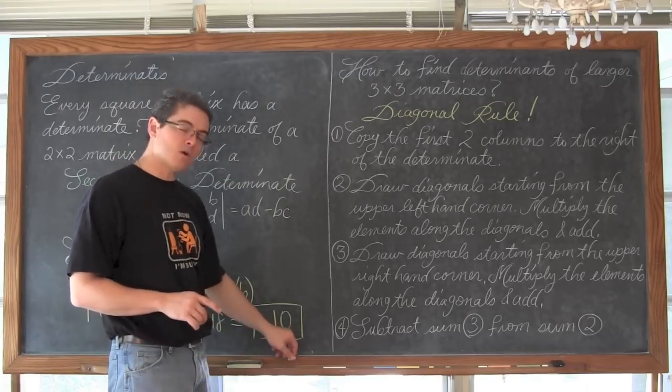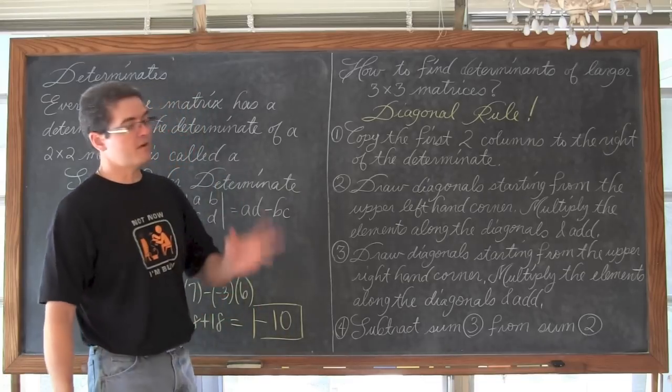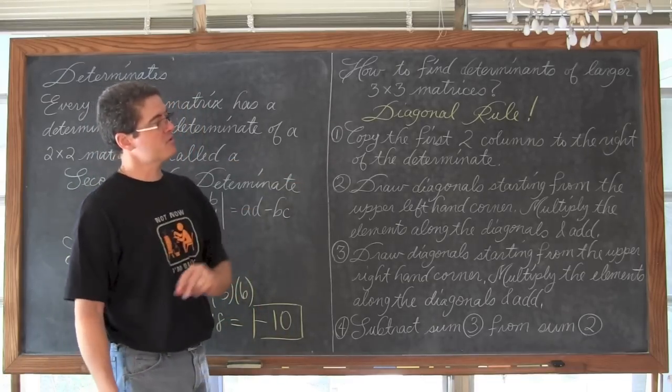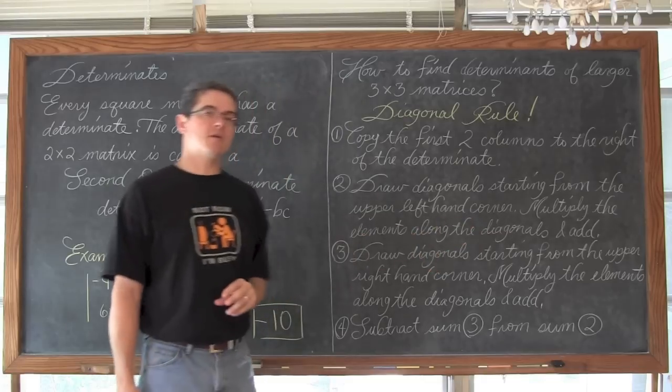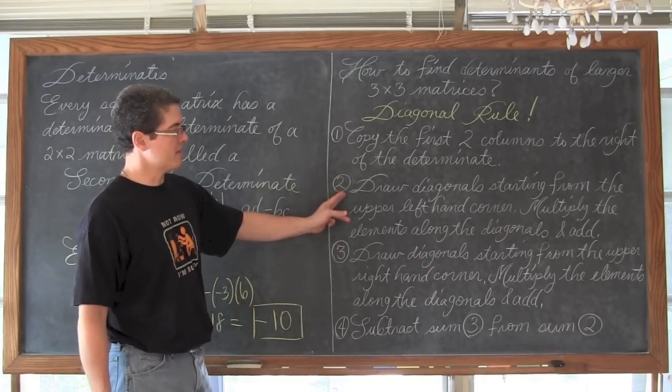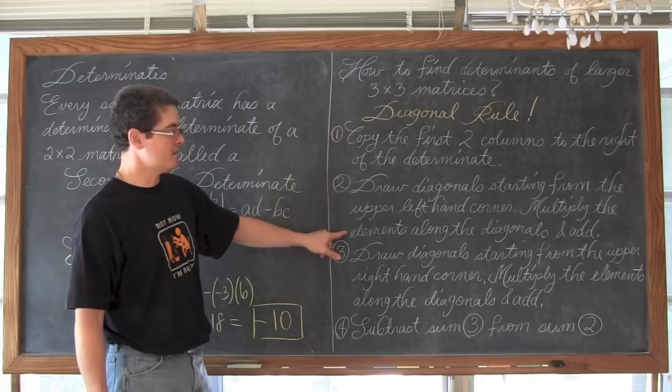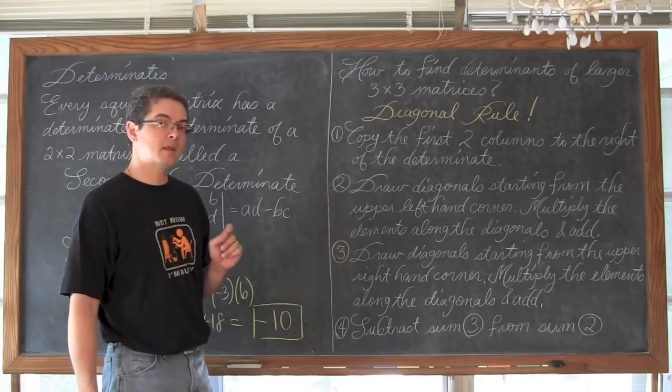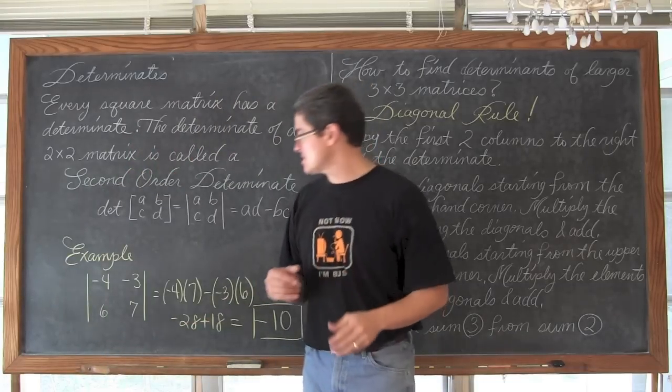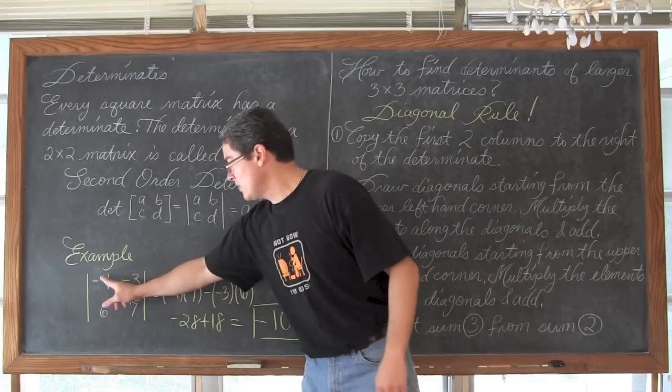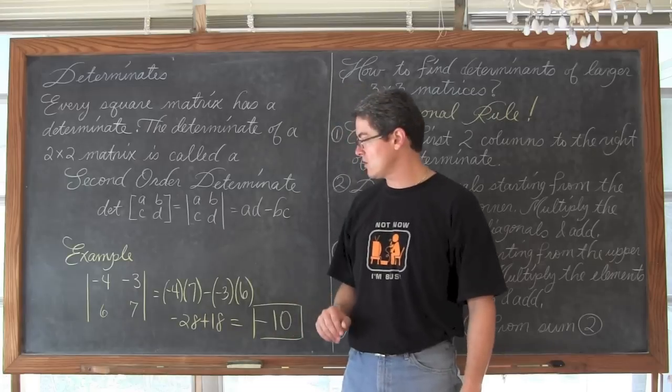How do you find a determinant though if it is a larger matrix, a 3x3 matrix? Well, what we are going to do is we are going to follow the diagonal rule, which says we are going to copy the first two columns of the matrix, and sort of just recopy those off to the right of the determinant. We are going to draw a diagonal starting from the upper left hand corner, and multiply the elements along that diagonal, and we are going to then add all of those elements. An expansion, but similar to what we did here. We multiplied along the diagonal going from the upper left hand corner down to the lower right hand corner.